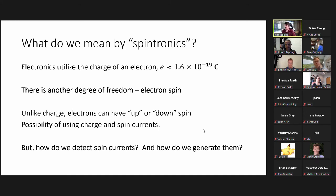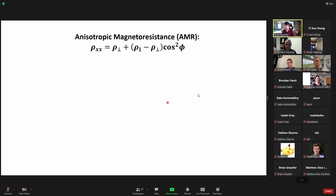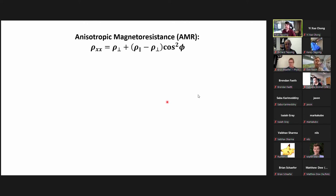But how do we detect spin currents and how do we generate them? First, I want to talk about some magnetoresistance effects — these are ways in which you can measure spin-based phenomena. For example, anisotropic magnetoresistance is when the longitudinal resistance of a ferromagnet depends on the angle phi of the magnetization with the current direction, where rho perpendicular and rho parallel correspond to the magnetization being perpendicular or parallel to the current.